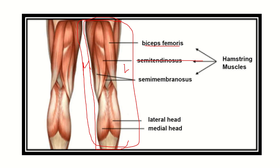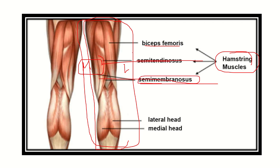One of them is biceps femoris, then semitendinosus, then semimembranosus — they are all called the hamstring muscles. On the medial side there are two important muscles: semitendinosus and semimembranosus. On the lateral part we can see there is the biceps femoris, which lies in the posterior and lateral part of the thigh.